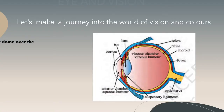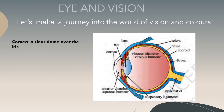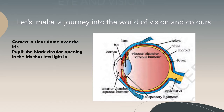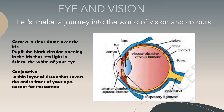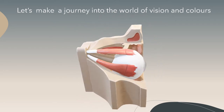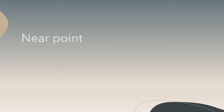Let's make a journey into the world of vision and colors. The parts of the eye include: the cornea, a clear dome over the iris; the pupil, the black circular opening in the iris that lets light in; the sclera, the white of your eye; and the conjunctiva, a thin layer of tissue that covers the entire front of your eye except for the cornea. It is through the pupil, in the middle of the iris, that light from an object reaches the lens of the eye.